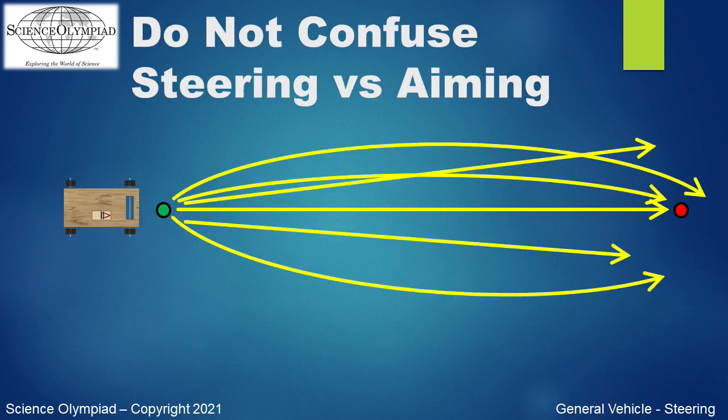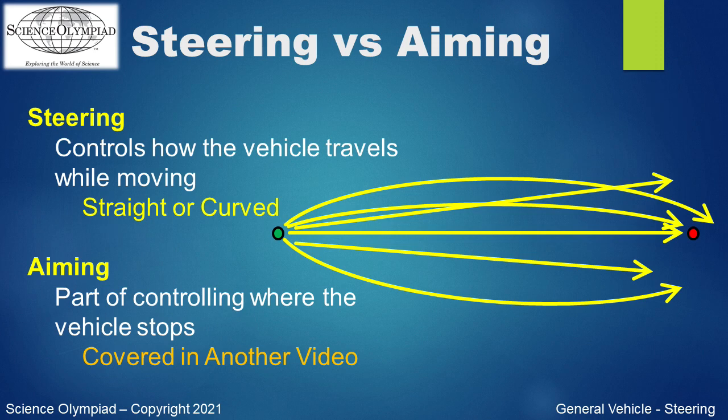Let's not confuse steering versus aiming. Steering controls how the vehicle travels while moving, whether the vehicle's path is straight or curved. Aiming is part of controlling where the vehicle stops. Another video will explain aiming in detail.